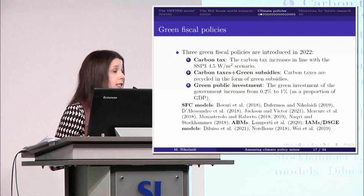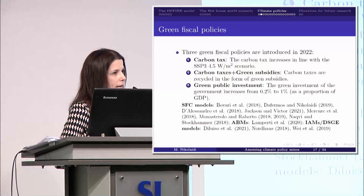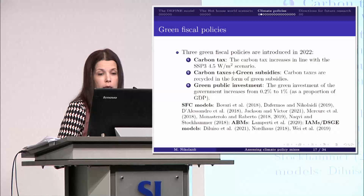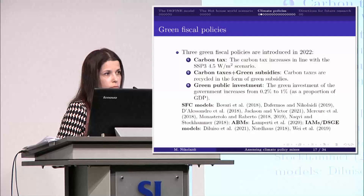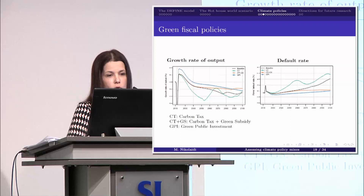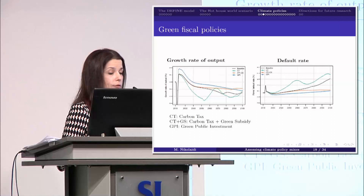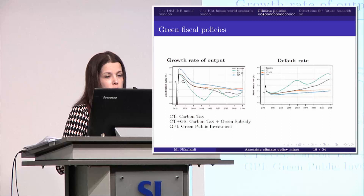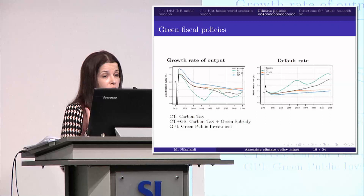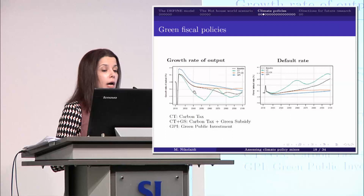Before showing results, I would like to emphasize that there is extensive literature investigating these policies — not only SFC models, but also agent-based models and mainstream models. The majority of them primarily focus on carbon taxes and do not pay so much attention to green public investment. When we implement carbon taxes, there is a decline in the growth rate of output because firms have to pay more taxes and, as a result, profitability goes down. Gradually, profitability and economic growth due to lower investment becomes lower and lower.